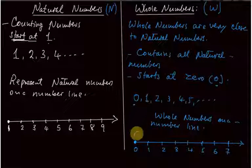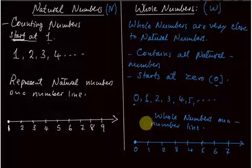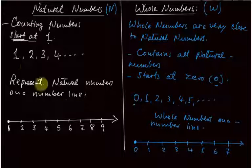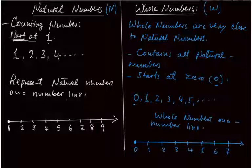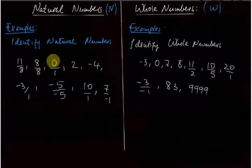So these are the definitions of natural numbers and whole numbers. The difference is simply that zero is the starting point for whole numbers, while one is the starting point for natural numbers. Make sure you understand them very clearly.